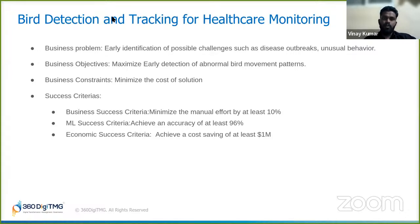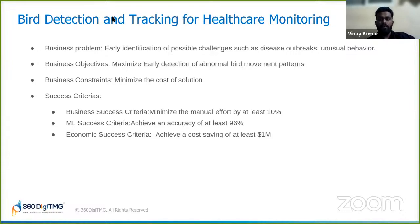The main objective of this project is the early detection of abnormal bird movement patterns, while also minimizing the cost of the solution. The overview is that we need to identify the unusual behavior of these chicks and send an alert to the manager at the poultry, so that they can check the health of that particular chick and treat it, resulting in a lower mortality rate. This is how the project was done for one of our clients.